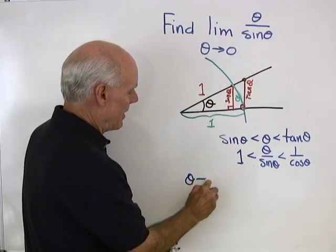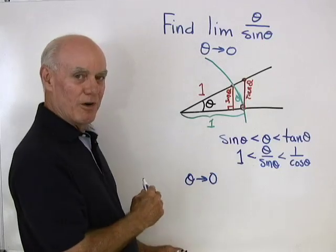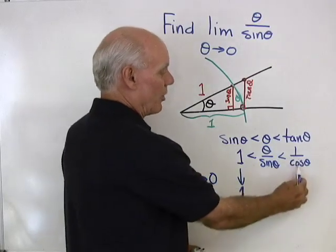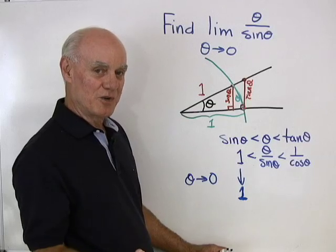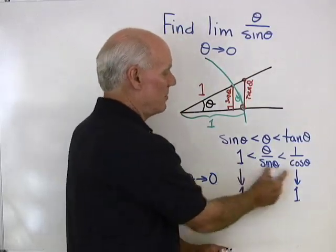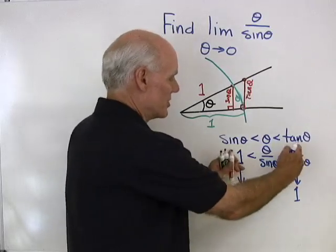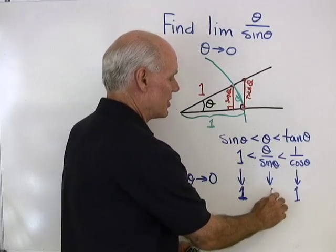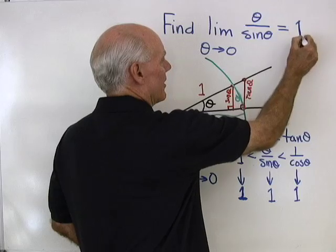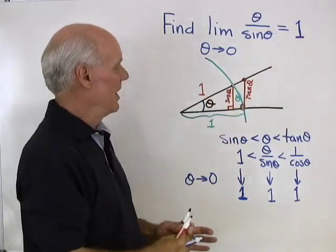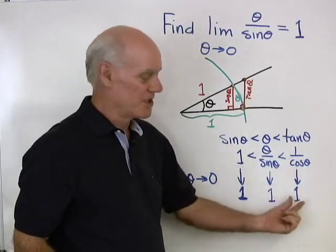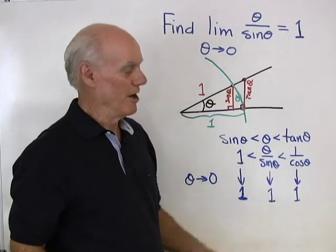As theta goes to zero, where does one go? Well, one goes to one. And one over cosine theta — as theta goes to zero, cosine theta goes to one, so this goes to one over one, which is one. The expression theta over sine theta is trapped between these two expressions. Since both go to one as theta goes to zero, theta over sine theta must also go to one. So the answer is one.